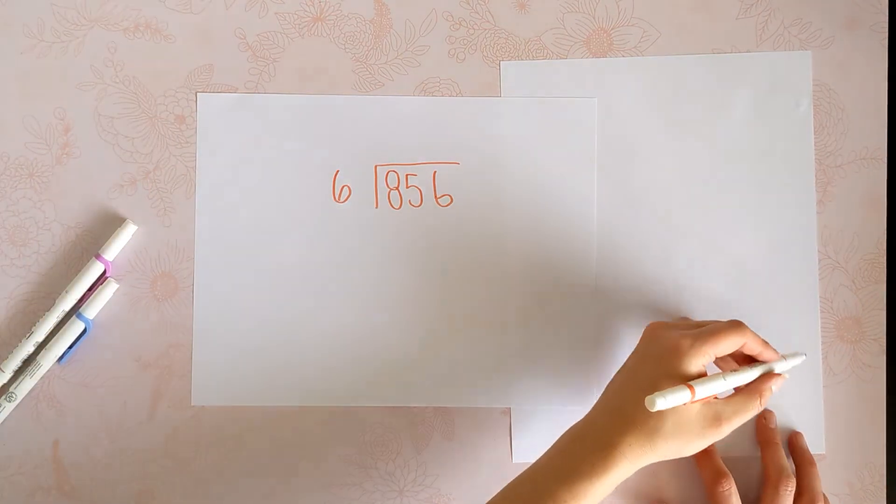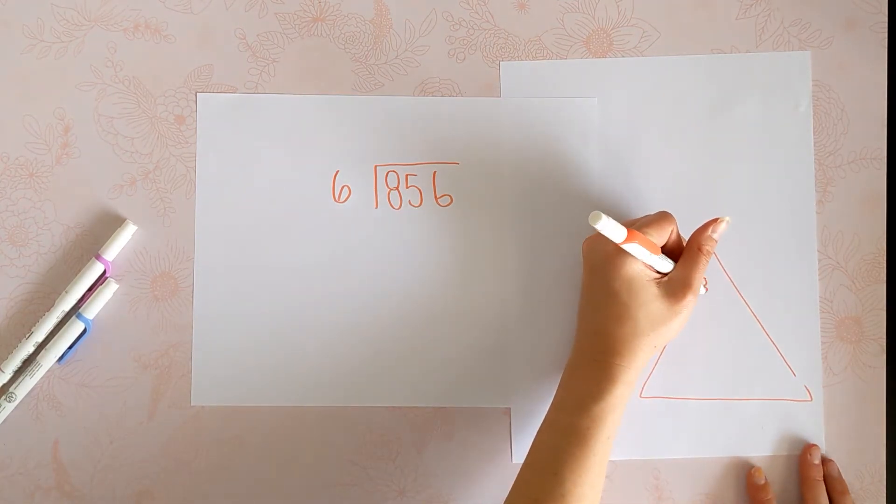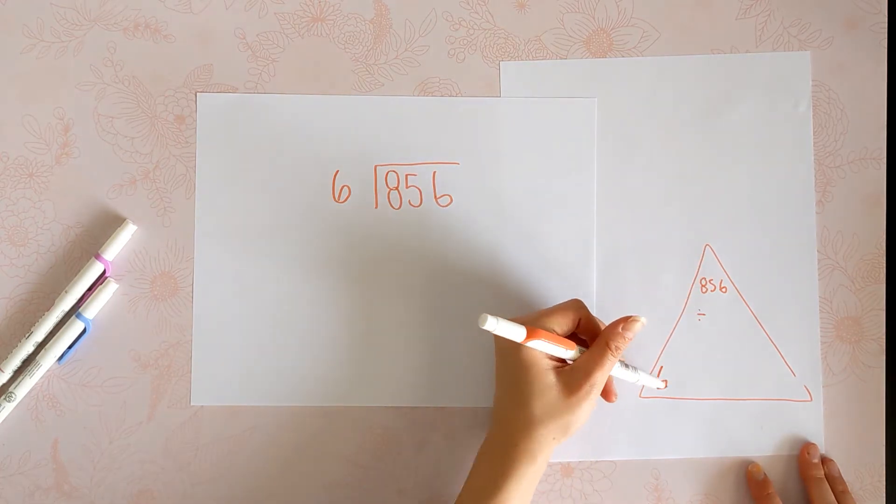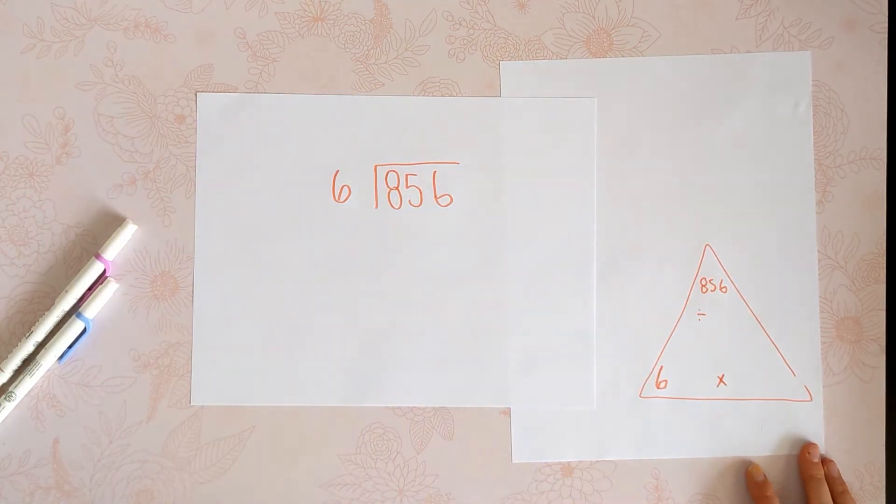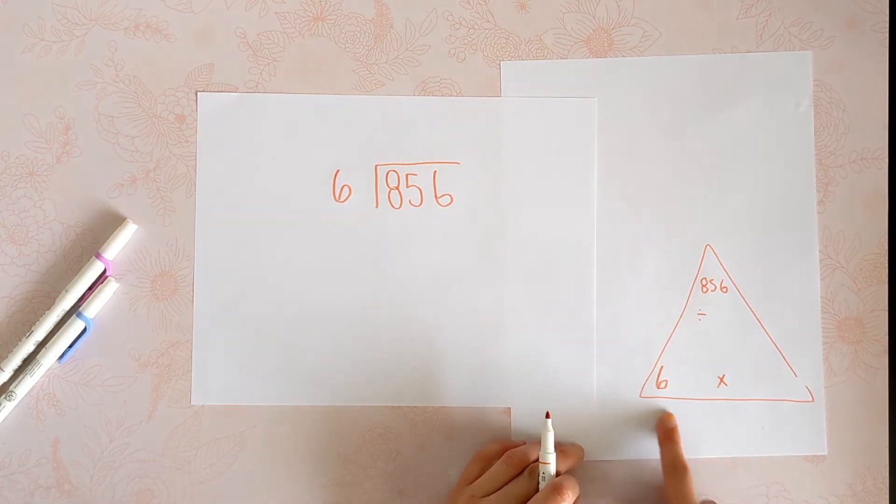I always draw a fact triangle. It helps me really visualize what I'm doing and keep in mind the relationship between division and multiplication, because if I am dividing this number up by 6, I'm also saying that 6 times something will get me to 856.